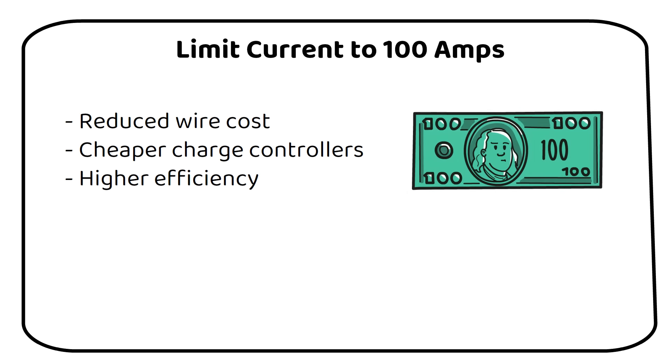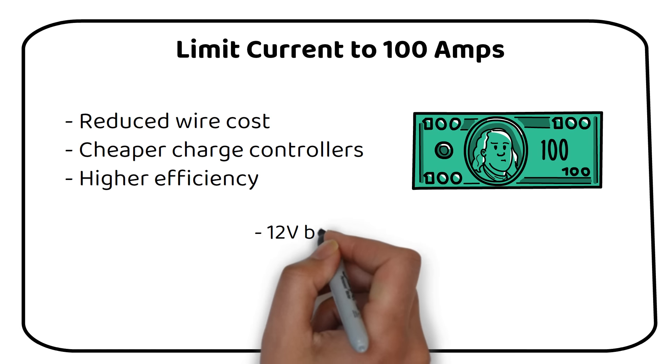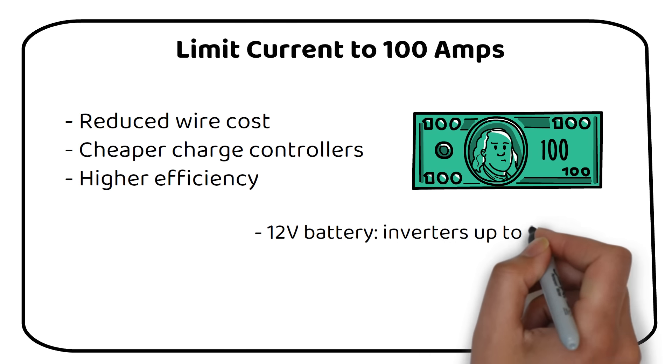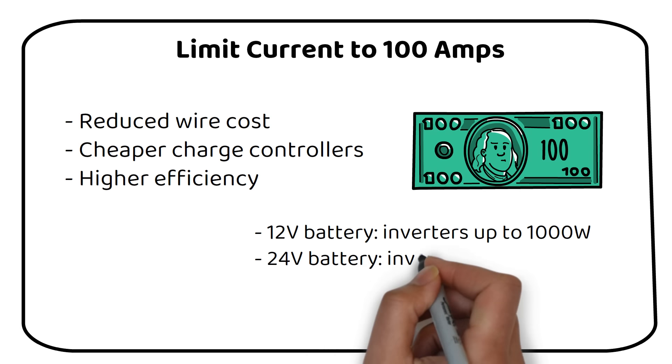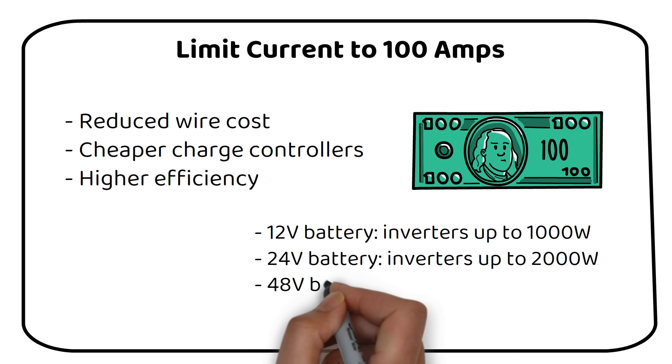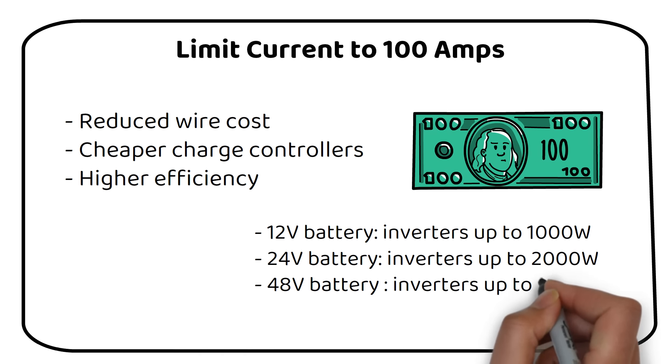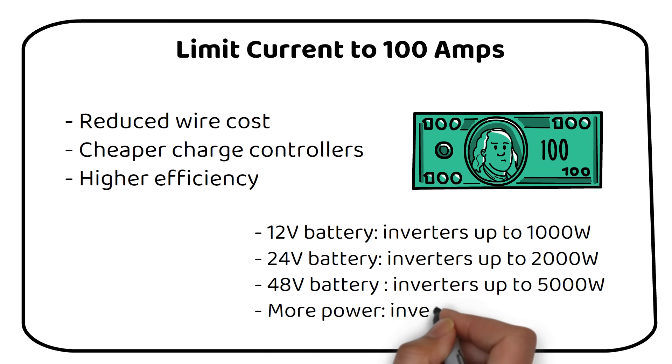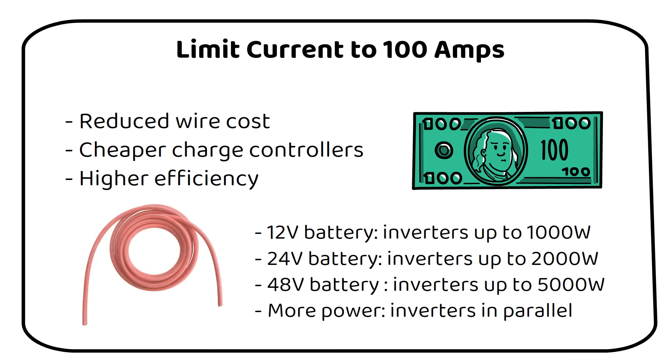We can limit the current by increasing the voltage. That means that for each battery voltage we can have a maximum inverter power range. These are: for a 12 volt battery inverters up to 1000 watts, 24 volt battery inverters up to 2000 watts, 48 volt batteries inverters up to 5000 watts. If you want more power, use a 48 volt battery with inverters in parallel.